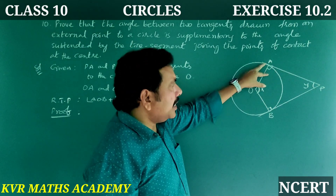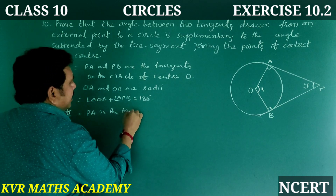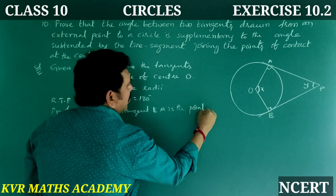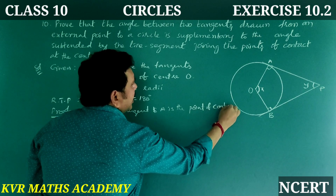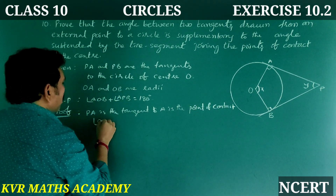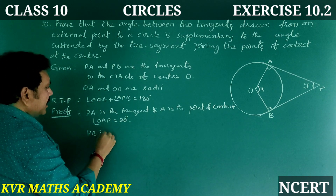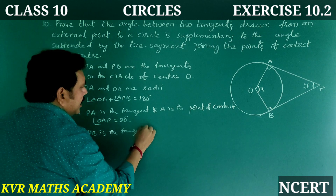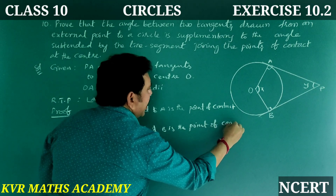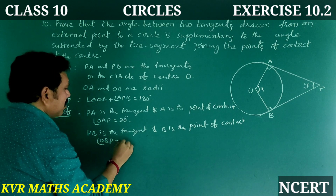PA is the tangent and A is the point of contact, so angle OAP is equal to 90 degrees. Similarly, PB is the tangent and B is the point of contact, so angle OBP is equal to 90 degrees.